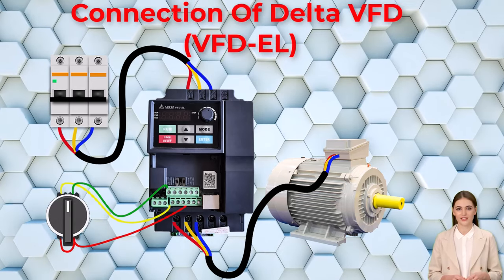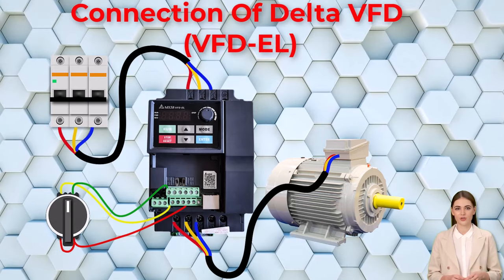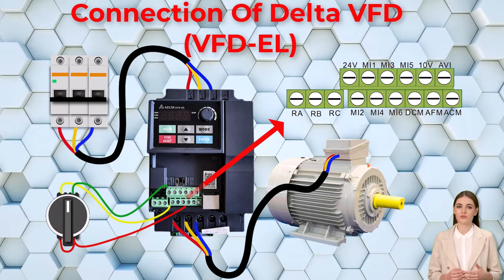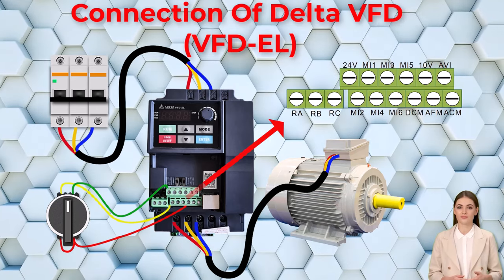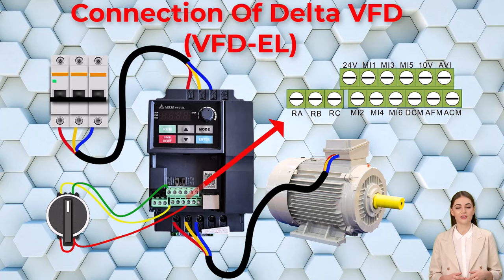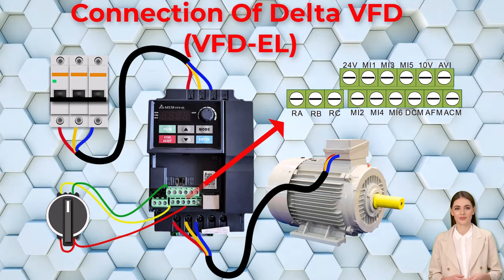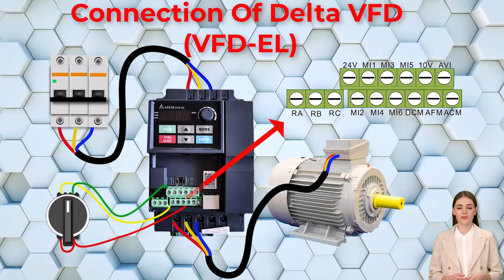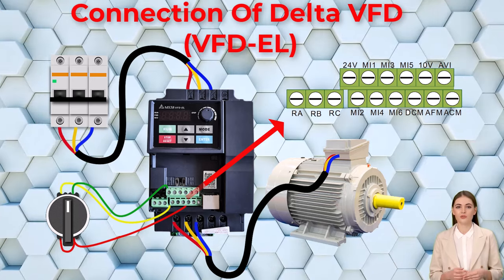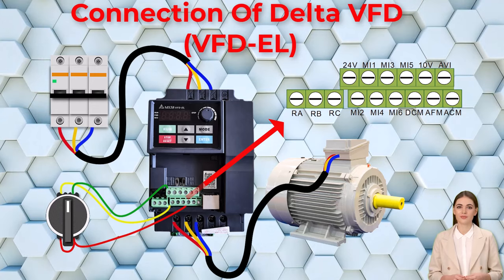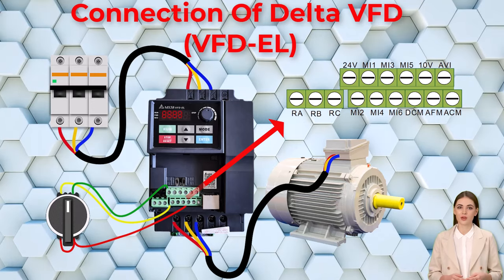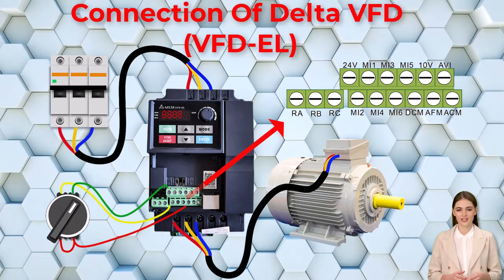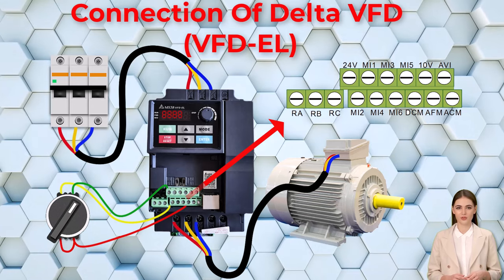Next, connect a selector switch to turn the motor on and off in both forward and reverse directions. Looking at the control connection in the catalog: DCM is common, MI1 is for forward, and MI2 is for reverse. Make the connections by following these instructions, then test the connection in both forward and reverse.